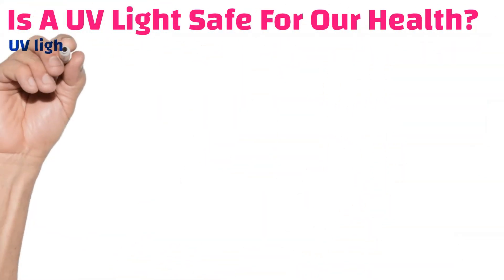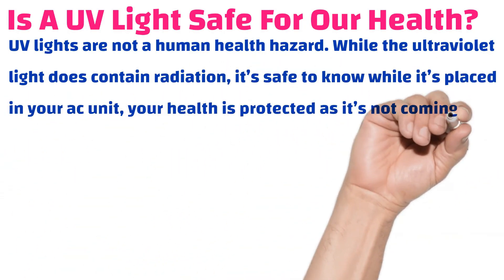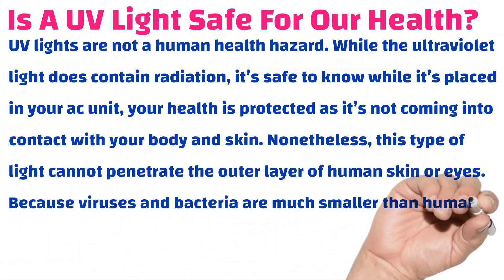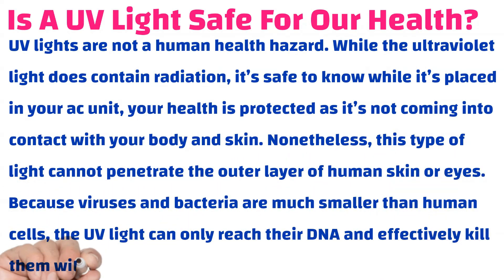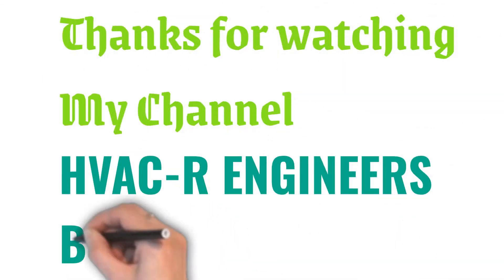Is UV light safe for our health? UV lights are not a human health hazard. While ultraviolet light does contain radiation, it is safe when placed in your AC unit because it does not come into contact with your body or skin. This type of light cannot penetrate the outer layer of human skin or eyes. Because viruses and bacteria are much smaller than human cells, the UV light can only reach their DNA and effectively kill them without damaging human tissue.